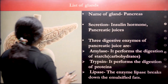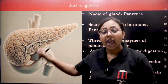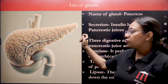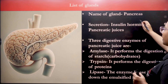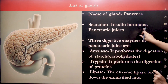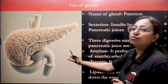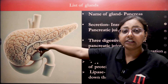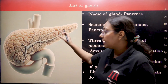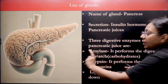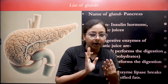The next gland is the pancreas. The pancreas can secrete both hormones and digestive enzymes, making it function as both types of glands. Its secretions include insulin hormone and pancreatic juices. Unlike other digestive glands that secrete only enzymes, the pancreas secretes hormones too. It is located exactly beside your stomach.